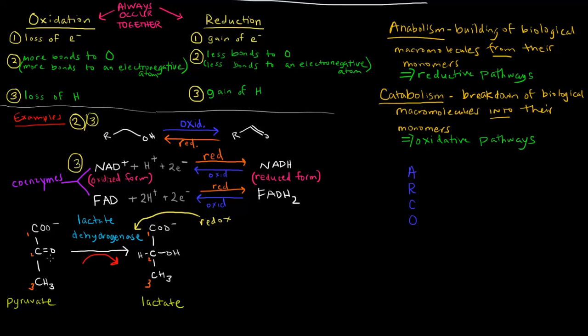This carbon is bound once to this carbon, once to this carbon, and twice to an oxygen. That same carbon here is still bound to this carbon and this carbon, nothing changed there. But now it only has one bond to oxygen and one bond to hydrogen. So we reduced the number of bonds to oxygen and we added hydrogens. So this pyruvate was reduced to lactate.